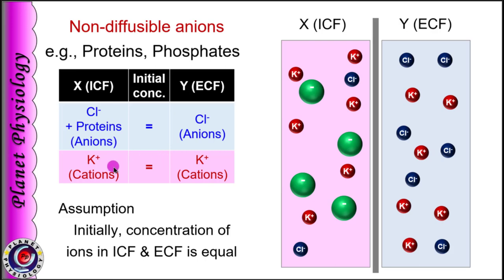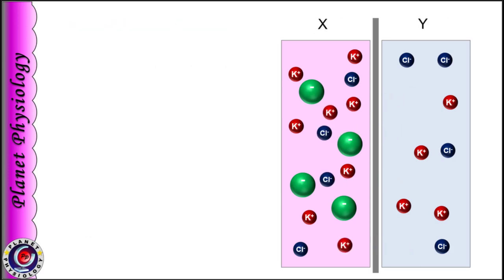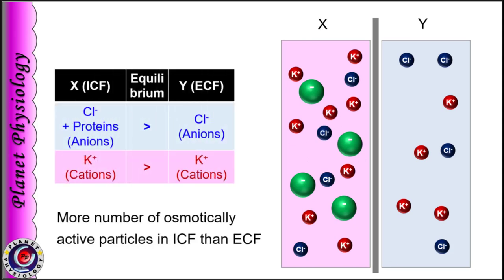In the same way, concentration of cations in compartment X and Y are equal. But due to the presence of non-diffusible anions like proteins in intracellular fluid, there is a lesser number of chloride ions in the intracellular fluid. This concentration gradient for chloride initiates chloride diffusion from extracellular fluid to intracellular fluid. And to maintain electroneutrality, potassium ions also diffuse into the intracellular fluid. As a result, at equilibrium, compartment X has more osmotically active particles than compartment Y.